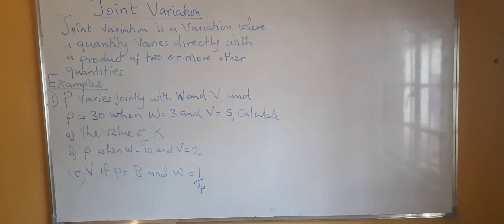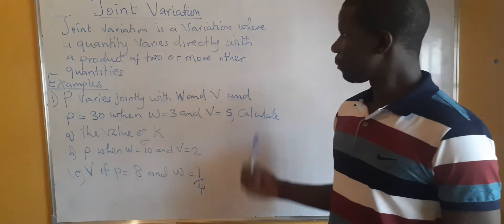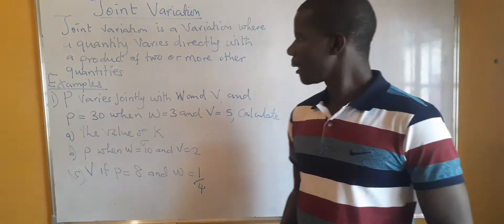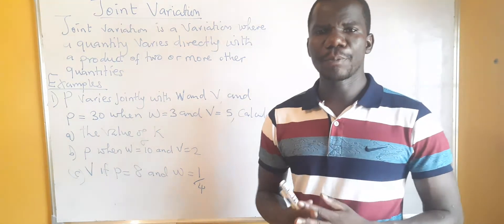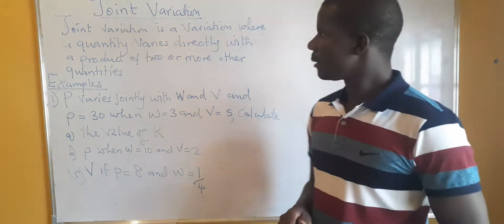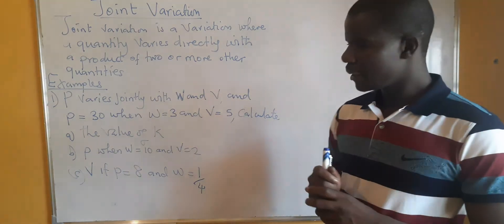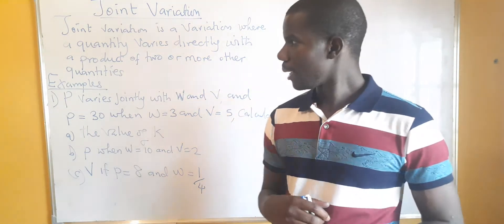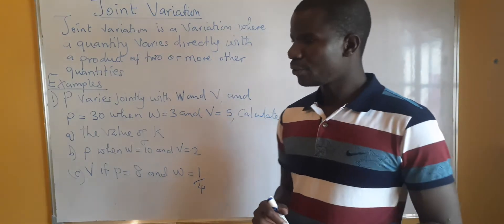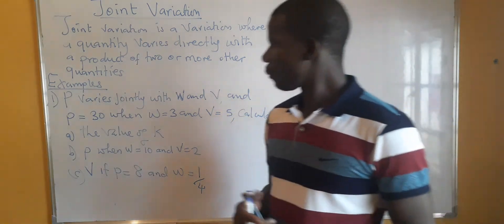Hello, welcome to this lesson where we are looking at joint variation as lesson 4 of the topic variation, which is a Grade 11 topic. We are presenting these lessons in order to help people that are writing their exams for the Examination Council of Zambia. If you follow them consistently, I assure you and promise you that you may not have serious challenges to pass the exam.